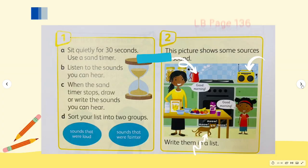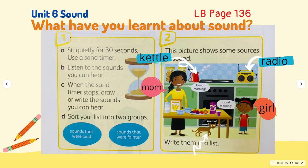So what have you learned about sound? In your learner's book, page 136, sit quietly for 30 seconds. Use a sound timer. Listen to the sounds you can hear. When the sound timer stops, draw or write the sounds you can hear. You can sort your list into two groups: sounds that were loud — meaning producing much noise or can harm your ears — and sounds that were fainter, meaning not clear or becomes quieter.